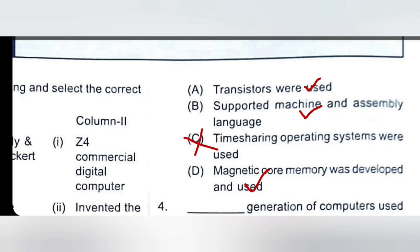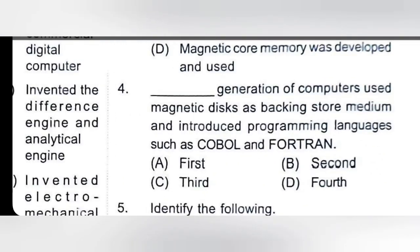Which generation of computers used magnetic disk as backing store medium and introduced programming languages such as COBOL and FORTRAN? We have to tell which generation used magnetic disk as backend memory to store data and introduced two languages, COBOL and FORTRAN. This is the third generation, so C is the right option.